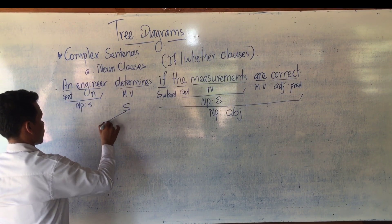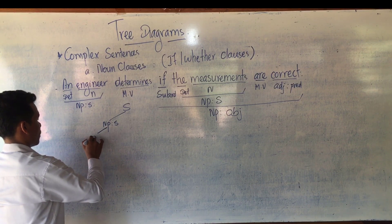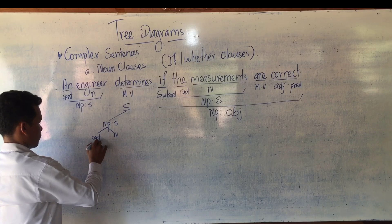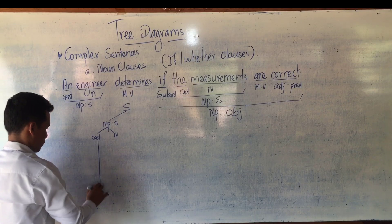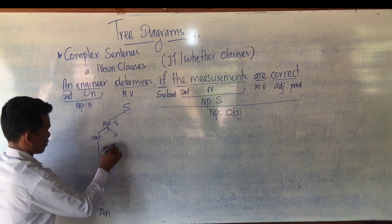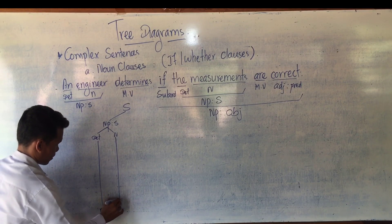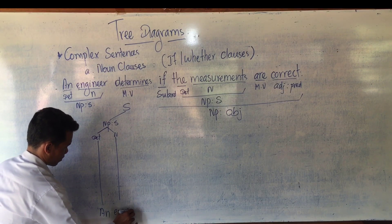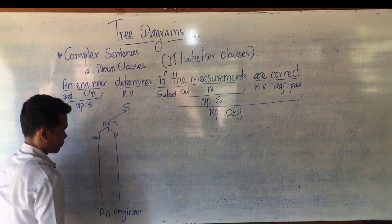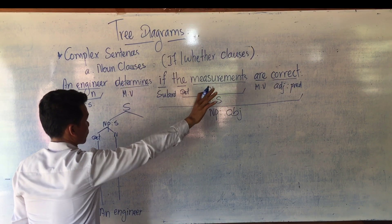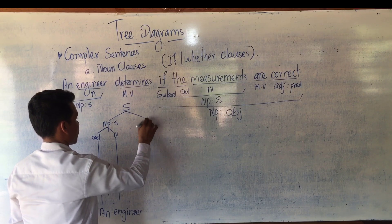In the diagram, the noun phrase subject consists of a determiner and a noun — the determiner is 'an' and the noun is 'engineer.' From the subject to the rest of the sentence, we have the verb predicate, which starts with the main verb 'determines.'